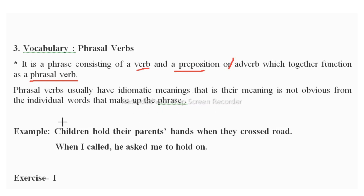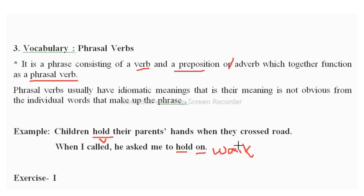Phrasal verbs usually have idiomatic meaning — their meaning is not obvious from the individual words that make up the phrase. The base verb meaning is totally different in phrasal verbs. For example: 'children hold their parents' hands when they cross the road' — here 'hold' means to grasp something. But when we add the preposition 'on', it completely changes its meaning to 'wait'.